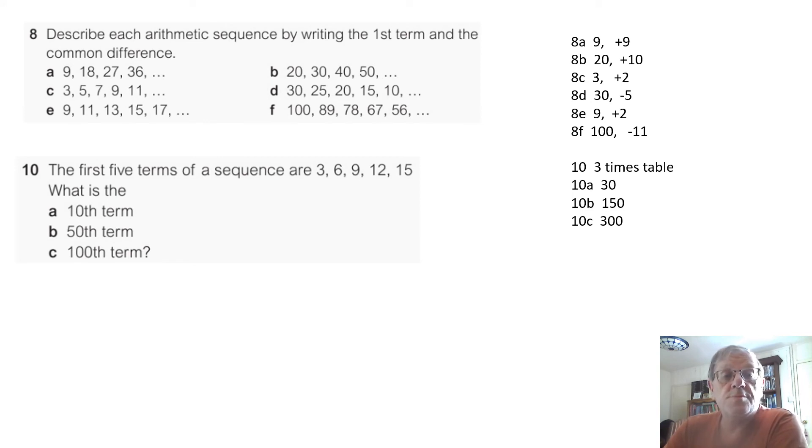So, describing each sequence by writing the first and the common difference. The first term in A starts with 9 and the common difference is add 9. B starts with 20 and the common difference is add 10. C starts with 3 and the common difference is add 2. D starts with 30 and now we're coming down by 5, so the common difference is minus 5. E starts with 9 and the common difference is add 2. And F starts with 100 and the common difference is minus 11. The first 5 terms are 3, 6, 9, 12, 15. Well, you should notice that that is the 3 times table. So the 10th term will be 3 times 10, which is 30. The 50th term, 3 times 50, which is 150. And C, the 100th term, 100 times 3 is 300.